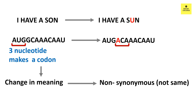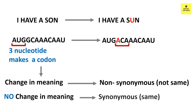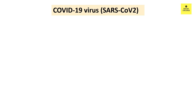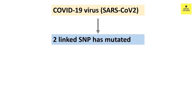If the change alters the meaning of the code, it is known as non-synonymous — that is, not the same. However, there is also a possibility that even after a change in nucleotide, the genetic code does not change; then it is known as a synonymous mutation. In this novel coronavirus SARS-CoV-2, two linked SNPs have mutated — one non-synonymous and one synonymous — which gave rise to the L-type from the S-type.